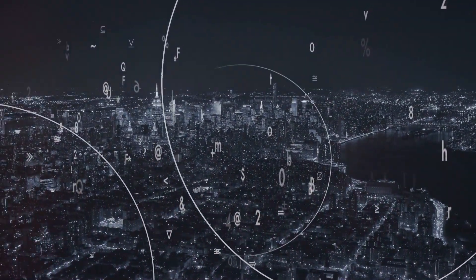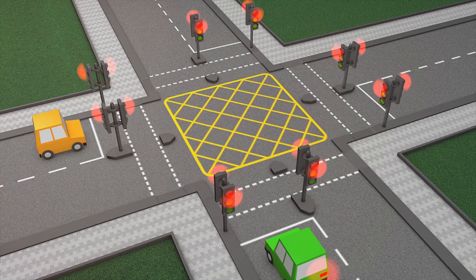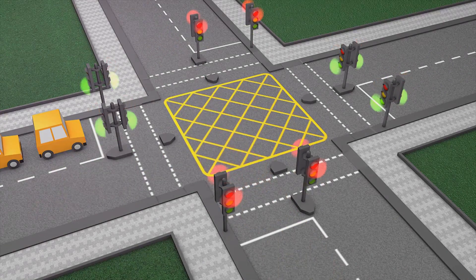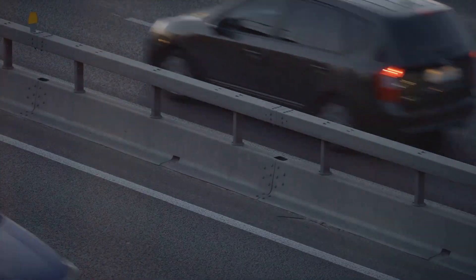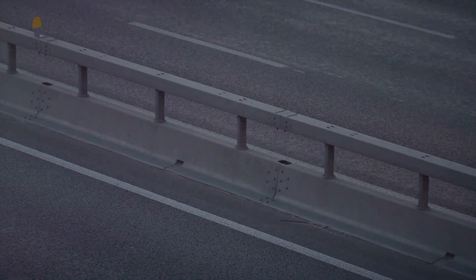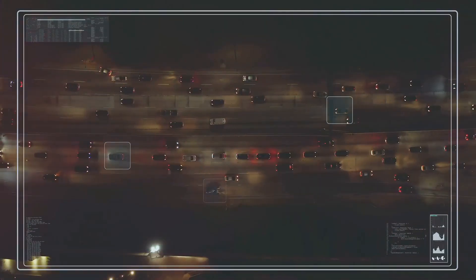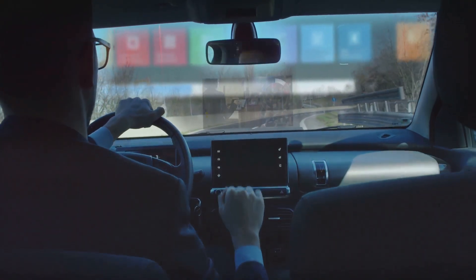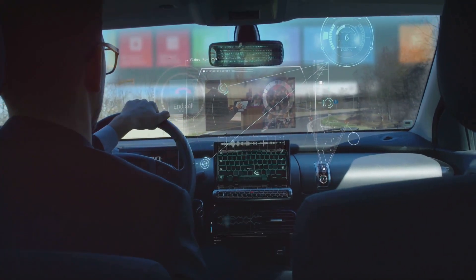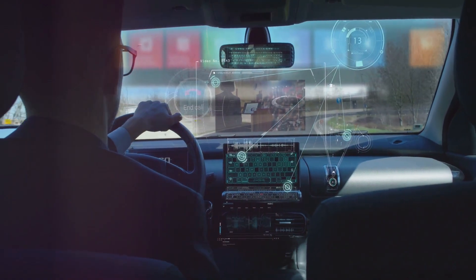AI also plays a pivotal role in improving road safety. By analyzing data from various sources, such as traffic cameras, accident reports, and vehicle sensors, AI can identify accident-prone zones and suggest preventative measures. This could range from improving road infrastructure to implementing stricter traffic regulations. Indeed, AI is steering the transportation industry towards a safer and more efficient future.